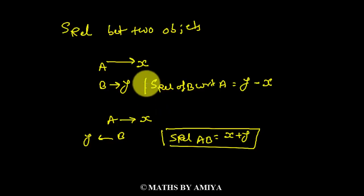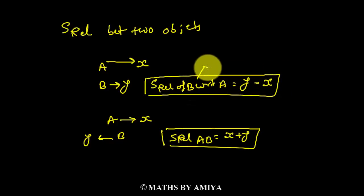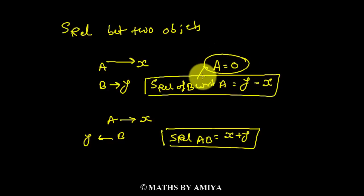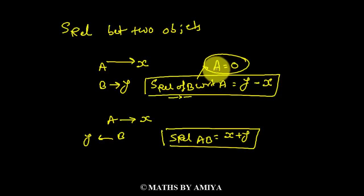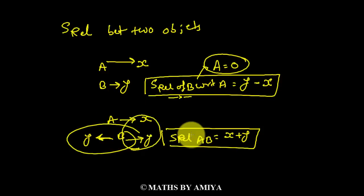The most important concept when we apply relative speed: if the speed of B with respect to A is y minus x, we are assuming A is at rest, speed equals 0. So the application of relative speed means the other object is considered at rest. Similarly, the speed of A with respect to B is x plus y, meaning we consider B to be at rest. So the first concept is: when applying relative speed, we consider the other object's speed as zero. Now, with this application, let's derive our formula.